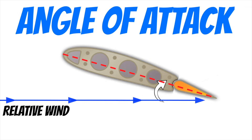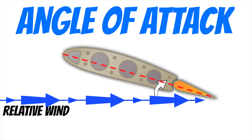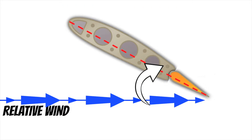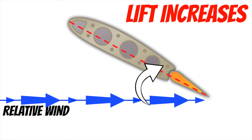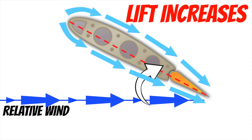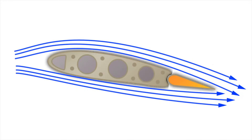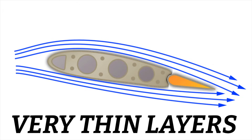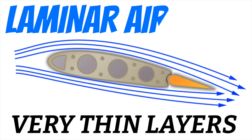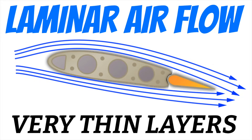As we mentioned in the last video, when we increase the relative wind or the angle of attack on our wing, we also increase the lift that a wing produces, as long as there's smooth air flowing around the upper and lower surfaces of the wing. As air flows above and below the wings, it actually does so in very thin layers — we call this laminar airflow, because the definition of the word laminar is thin horizontal layers.